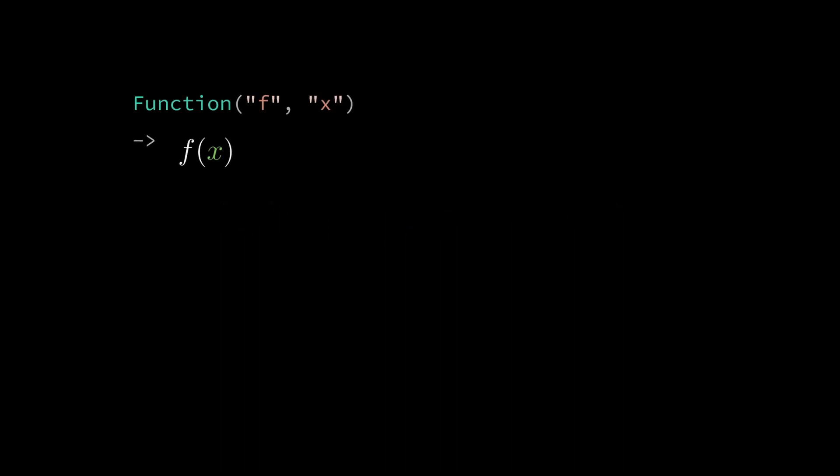The latex for f of x is generated by the construction function f comma x. To create the latex for f of x plus h we place strings for x plus and h inside an array.